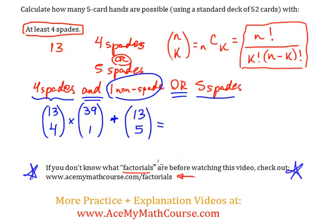Great. So I'm going to work this out with a calculator. 13 combination 4 is 715. 39 combination 1 is just 39. And 13 combination 5 is 1,287.